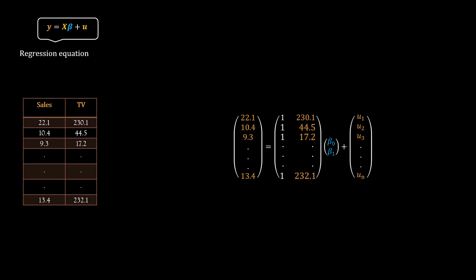Note that for multiple linear regression with more than one independent variables, we just keep adding the variables as additional columns in the design matrix and keep adding one beta coefficient per variable to the beta vector.